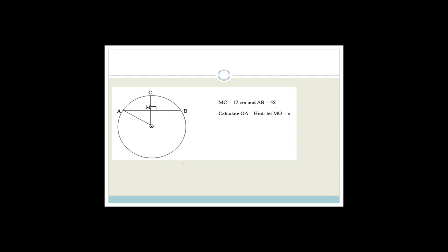This is a typical exam question whether you're in grade 11 or grade 12. MC is 12 centimeters, AB is 48 centimeters total, and this angle is 90 degrees. So both halves are 24. They want us to calculate OA — and they give the hint: let MO equal X.